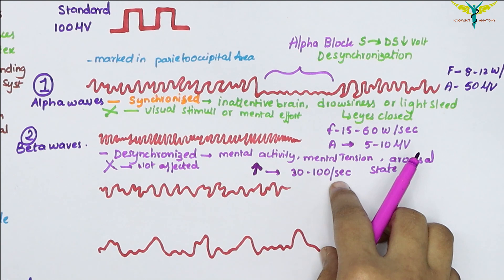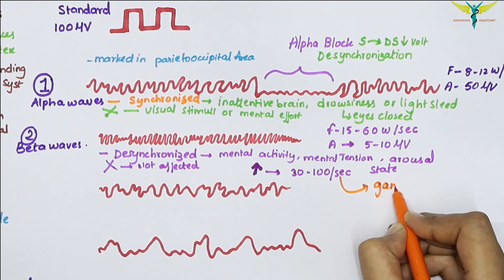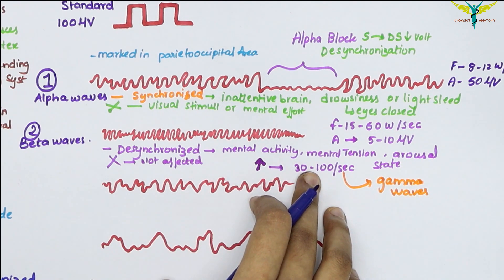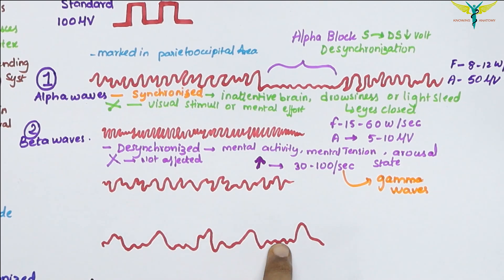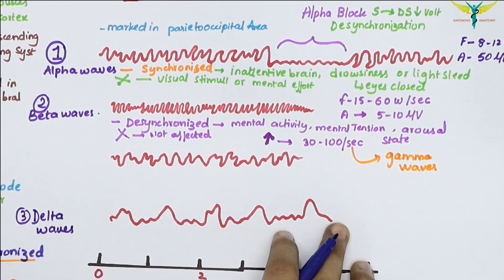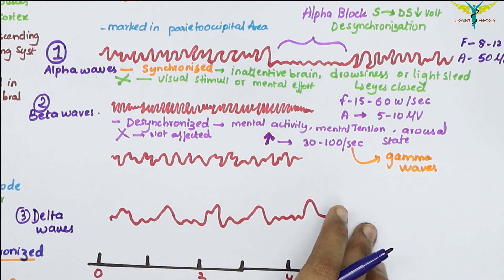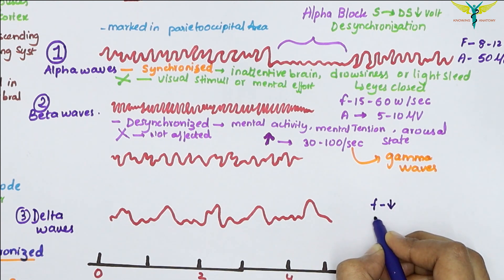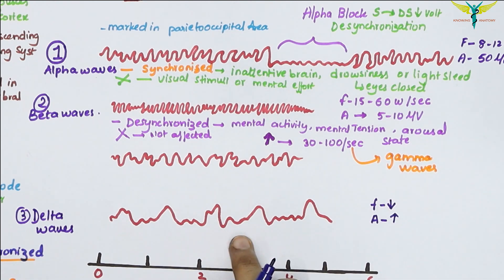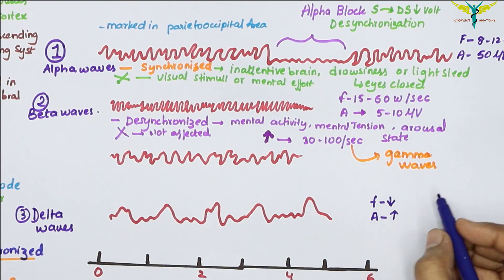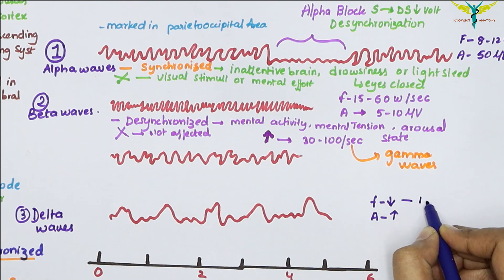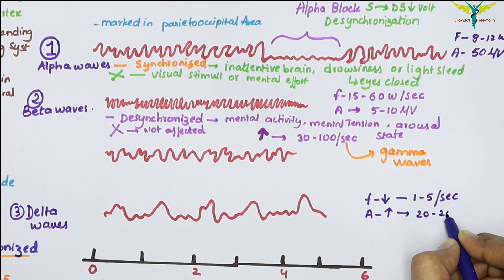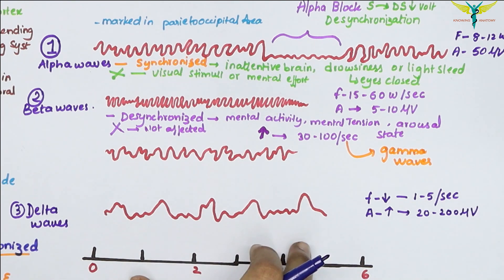As these waves are very high in frequency, they are sometimes called the gamma waves. It is a controversial topic. The third type of rhythm is the delta rhythm that causes the delta waves. The delta rhythm includes waves with low frequency and high amplitude. The frequency is 1 to 5 per second with an amplitude of 20 to 200 microvolts.